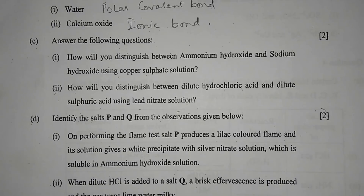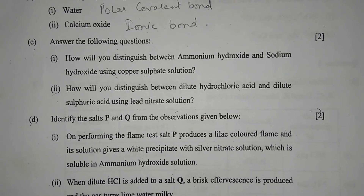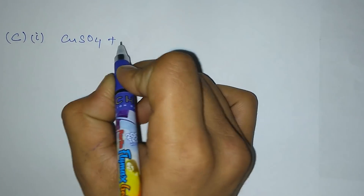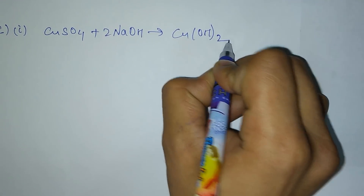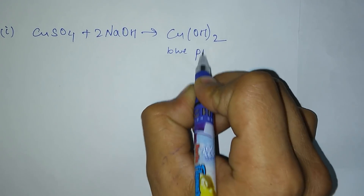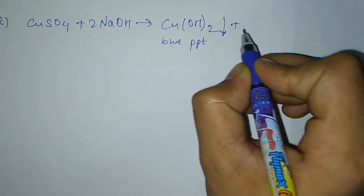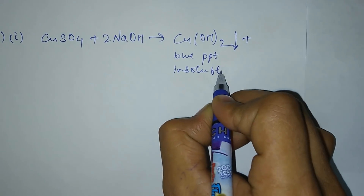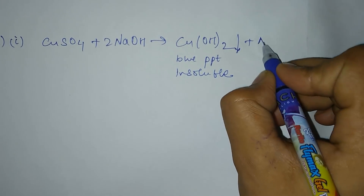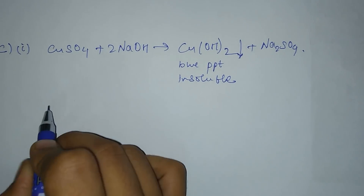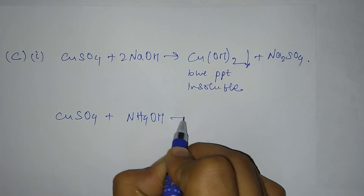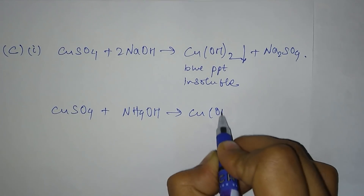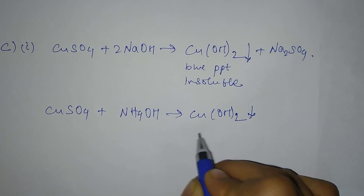Question 2c, number 1: how will you distinguish between ammonium hydroxide and sodium hydroxide using copper sulfate solution? Copper sulfate reacts with NaOH to give a blue color precipitate which is insoluble, and forms Na2SO4. Whereas when it reacts with ammonium hydroxide, it gives the same blue precipitate but it is soluble in excess ammonium hydroxide.